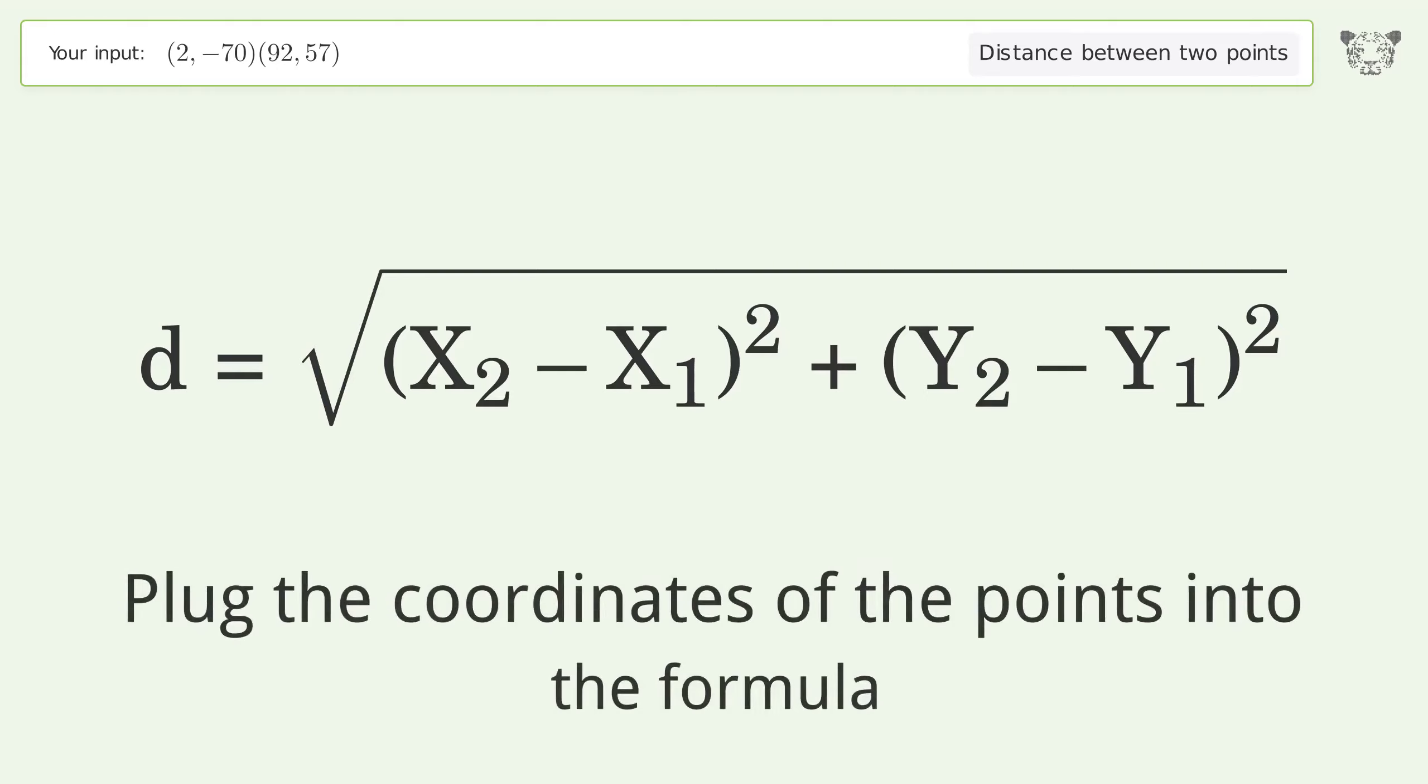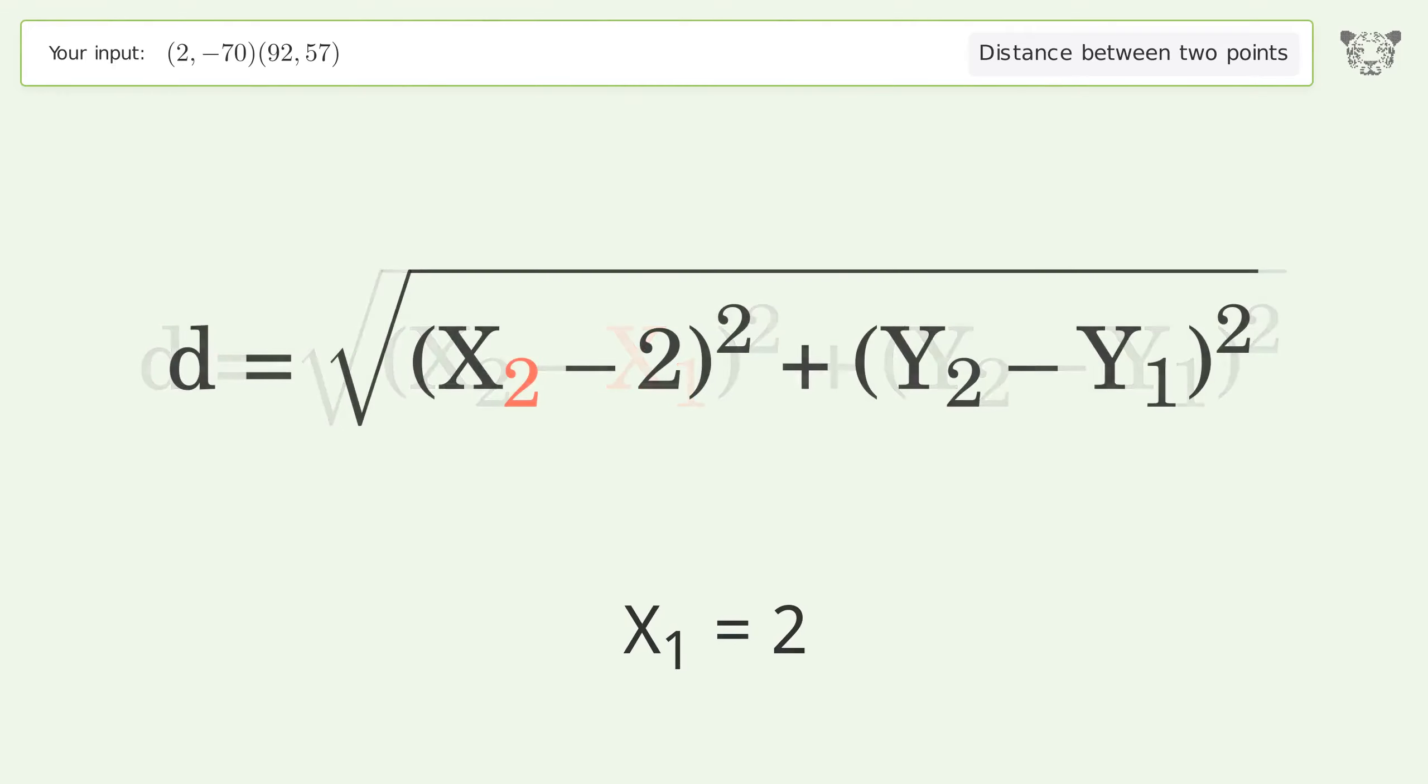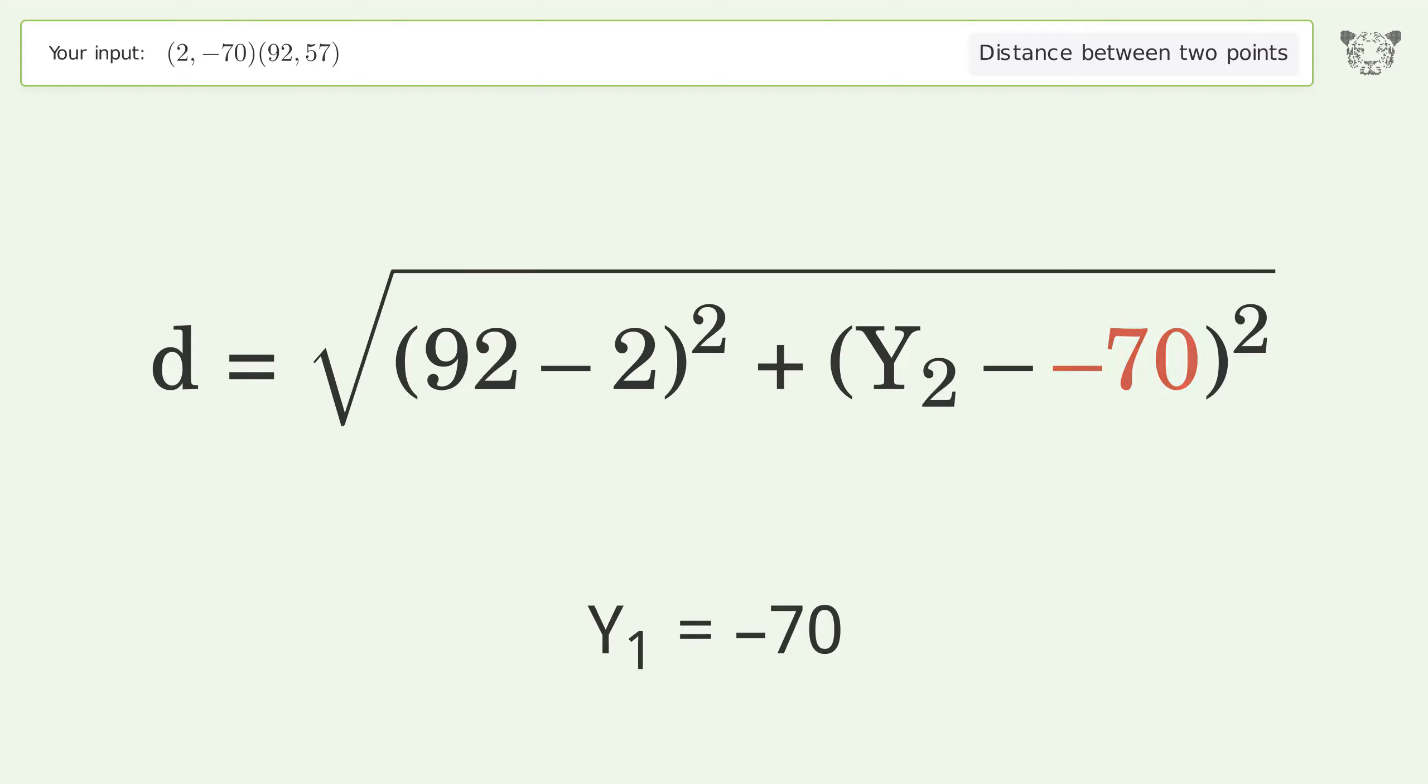Plug the coordinates of the points into the formula: x1 equals 2, x2 equals 92, y1 equals negative 70, and y2 equals 57.